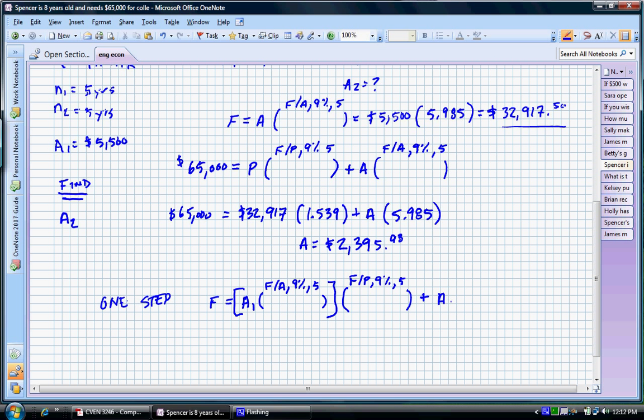Remember, also during that period, we have this A2, our second series of investments, that accumulates over the course of five years, and that's F slash A to the nine percent and five. And what we're going to do here is just throw the numbers in really quickly. We know that we need $65,000. We know our initial A is $5,500. We are going to multiply that by the F slash A factor, nine percent and five. That's 5.985. Remember, we're going to multiply that by the F slash P factor as well. And recall that's 1.539. Add that to the second series, which is A, we don't know. And the F slash A factor, nine percent and five is again 5.985. And if we solve for A, that A is equal to $2,395.98.